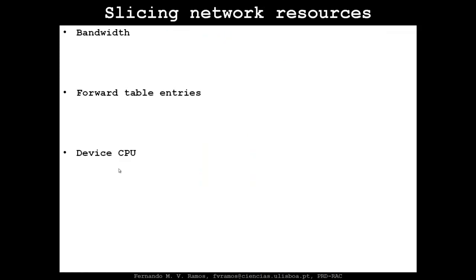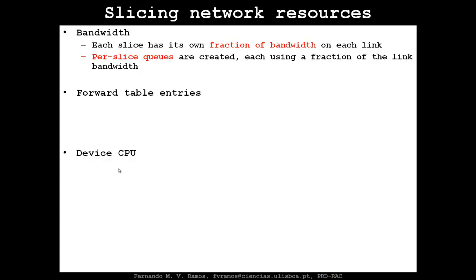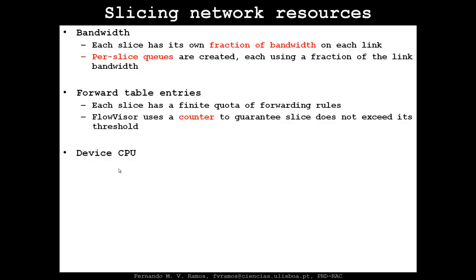The most important aspect here is slicing — how is slicing of network resources achieved? There are many axes for slicing. One is bandwidth: each slice has its own fraction of bandwidth on each link. In the implementation they use per-slice queues in each switch, so if you have two or three tenants, each tenant gets one third of the bandwidth of the links it uses. There is also slicing of forwarding table entries — a switch has finite fast TCAM memory to hold the forwarding table, so each slice gets a finite quota of forwarding rules, and FlowVisor controls who uses what using a counter.